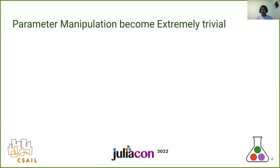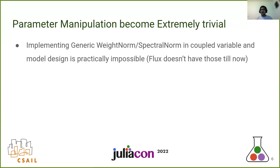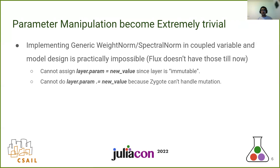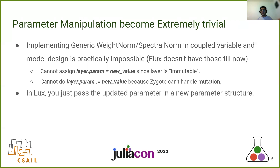First of all, Lux allows parameter manipulation which is extremely easy. You might wonder why Lux doesn't have weight norm or spectral norm or other kinds of layers which manipulate parameters. Flux's design makes it kind of impossible to implement these. In PyTorch, you would do layer.param equals the new updated value, but Flux's layers are mutable while PyTorch classes are not. You could do layer.param dot-equals to update the parameters in place, but Zygote doesn't support mutation, so that approach is hopeless. In Lux, however, you can just get the new parameters, wrap it in a named tuple, pass it into the next layer, and it just works. We also have default support for these layers in the core framework.